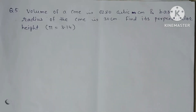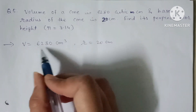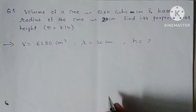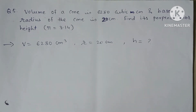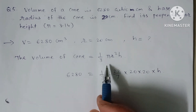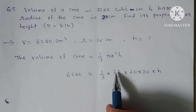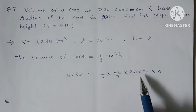Question No. 5: The volume of a cone is 6280 cubic centimeters and the base radius of the cone is 20 cm. Find its perpendicular height. Take π = 3.14. Given: volume = 6280, radius = 20. Height is not given. Using the volume formula: Volume = (1/3)πr²h, so 6280 = (1/3) × 3.14 × 20 × 20 × h.